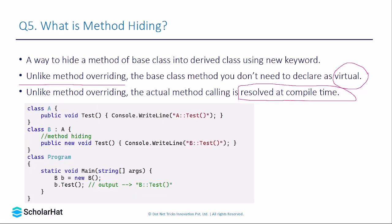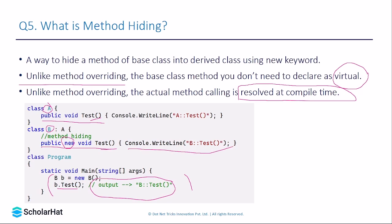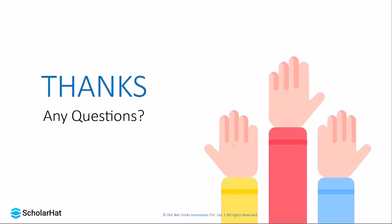Here we have a class A with a method declared as public void Test. Class B, which inherits from A, also declares a method with public new void Test. The new keyword indicates we are hiding the base class method. When we create an object of the derived class and call this method, the output shown is from the derived class B. This is how method overloading, overriding, and hiding work in C#. We have covered polymorphism, encapsulation, abstraction, and these method types. Please let us know if you have any questions.